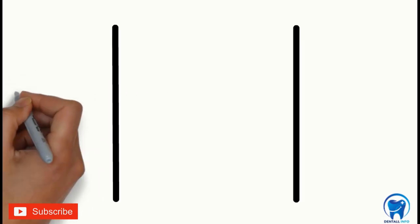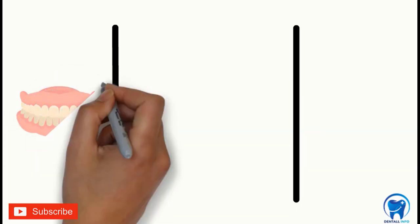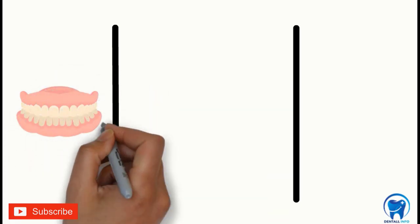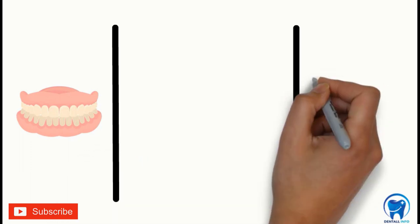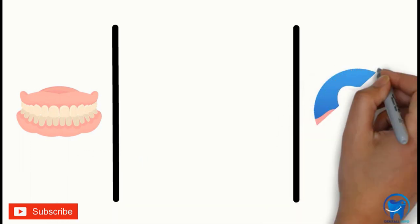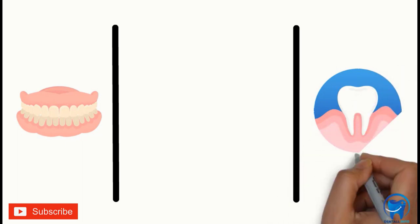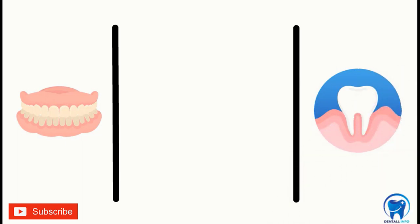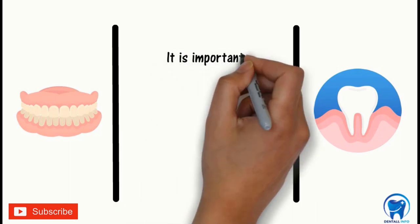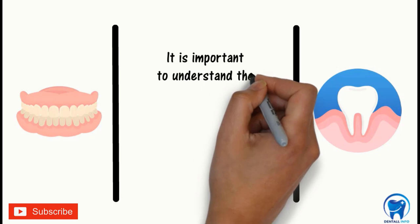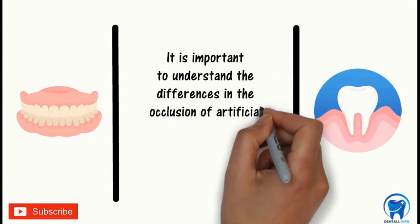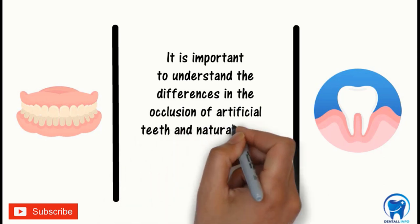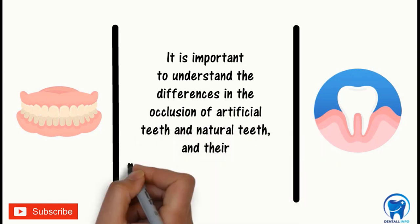Prior to selection and arrangement of the artificial teeth, the type of occlusal scheme is planned. It is very important to understand how the correct selection of occlusal scheme can help in successfully replacing natural teeth with artificial teeth. It is therefore essential to understand the differences in the occlusion of artificial teeth and natural teeth and their nature of transfer of forces.